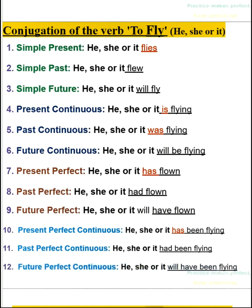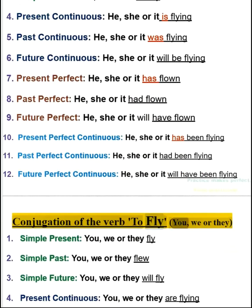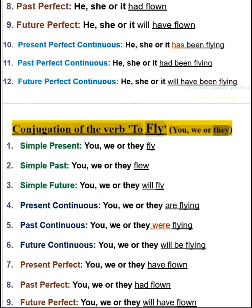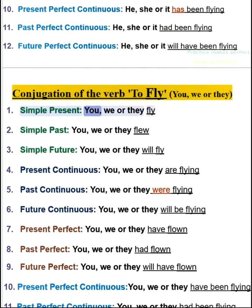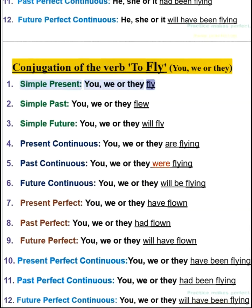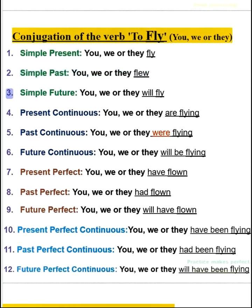Conjugation of the verb to fly — you, we, or they: 1. Simple present — you, we, or they fly. 2. Simple past — you, we, or they flew. 3. Simple future — you, we, or they will fly.